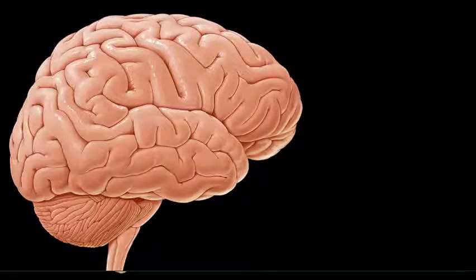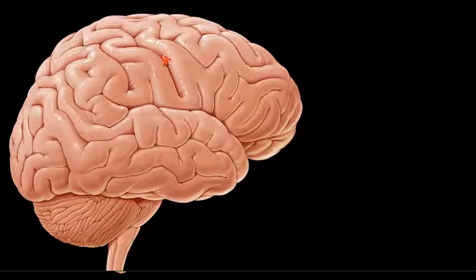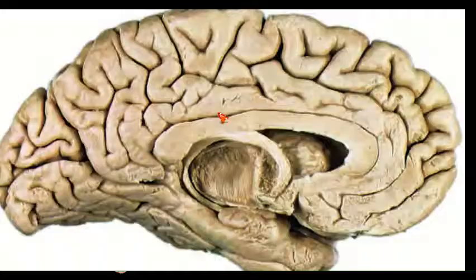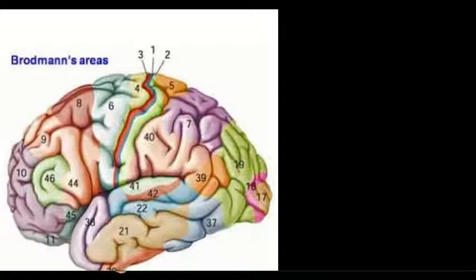We have already discussed the cerebrum, sulci, and gyri. Here you can see the lateral Sylvian fissure and the central sulcus. This is the medial surface of the cerebrum. Now we are going to discuss the functional areas one by one — first the motor areas, then the sensory areas, starting with the frontal lobe, then parietal, temporal, and occipital lobe.